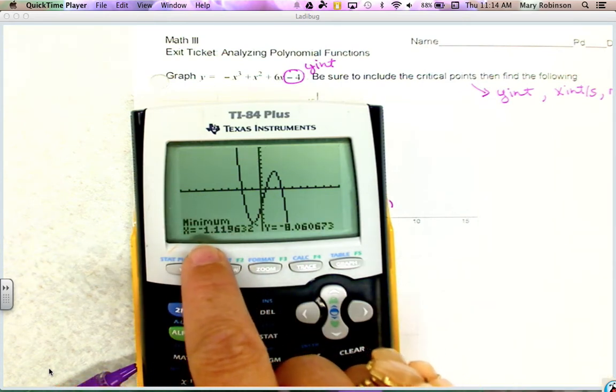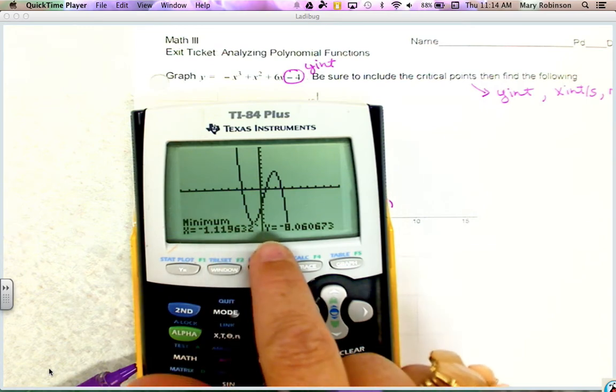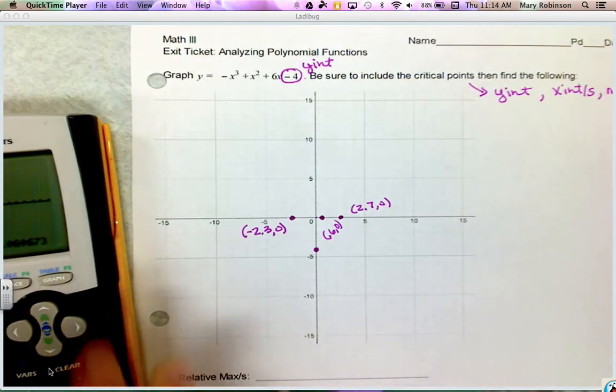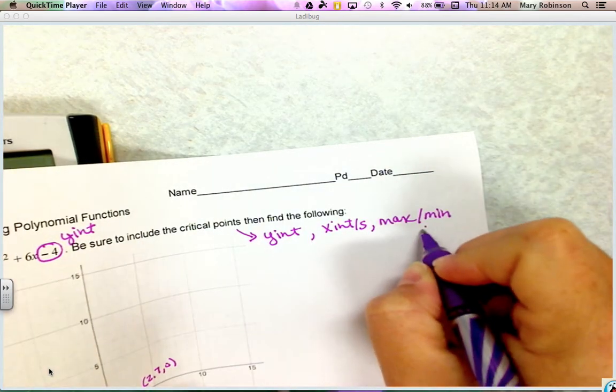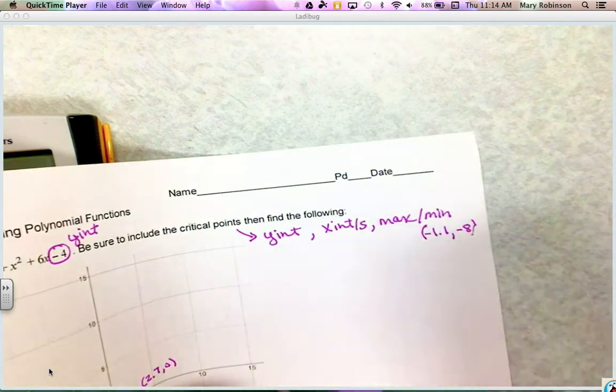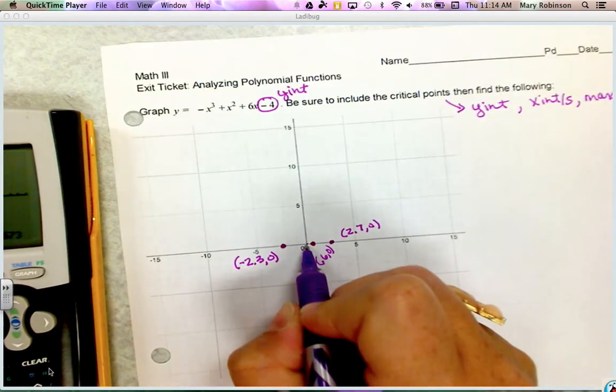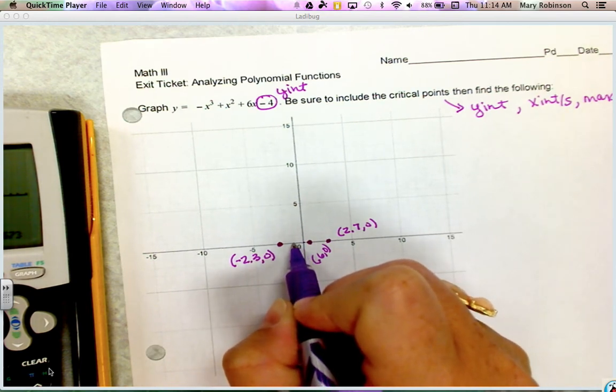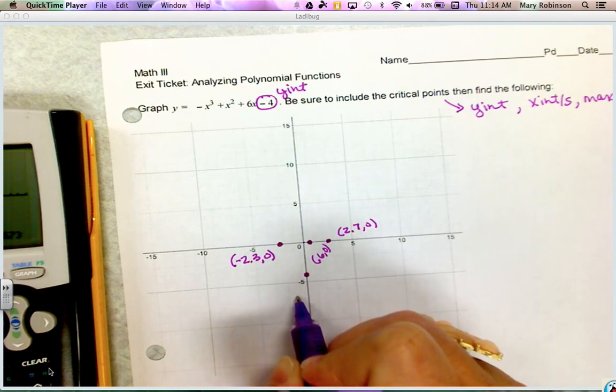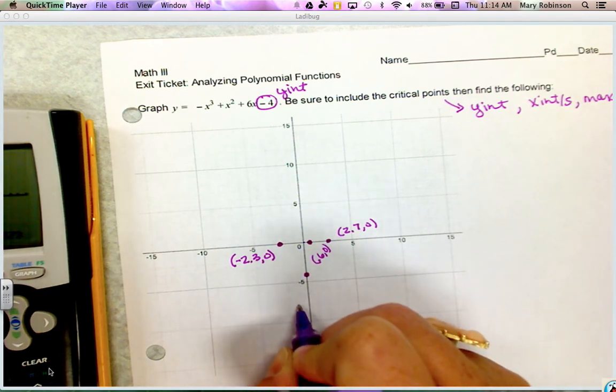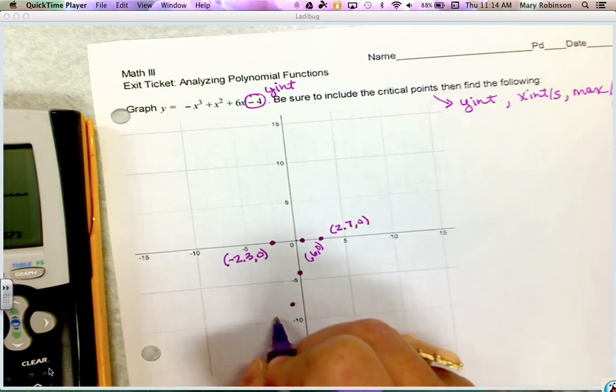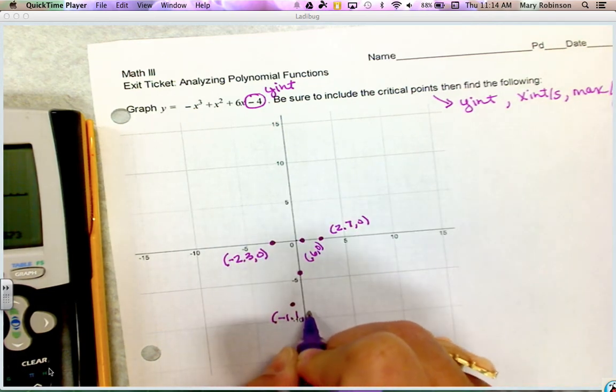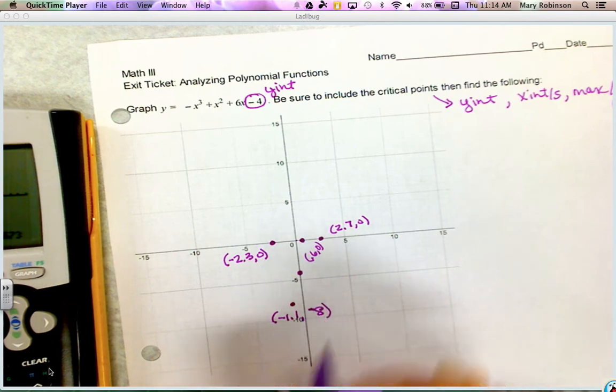Then it will tell us our minimum point is at (-1.1, -8) approximately. If you want, you can write your min over here: (-1.1, -8), and plot that point. I'm going to go from the origin left just a hair over where the one would be, and then down 5, 6, 7, 8, right about there. I'm going to label that point - we're going to need that when we do increasing and decreasing intervals.